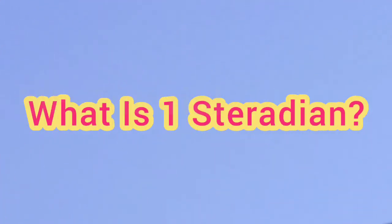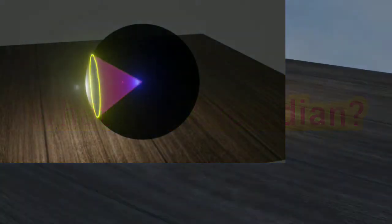What is one steradian? Steradian is a unit of solid angle in SI method.